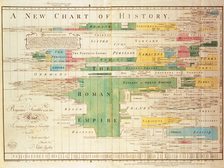Timelines can use any suitable scale representing time, suiting the subject and data. Many use a linear scale, in which a unit of distance is equal to a set amount of time. This timescale is dependent on the events in the timeline. A timeline of evolution can be over millions of years, whereas a timeline for the day of the September 11 attacks can take place over minutes, and that of an explosion over milliseconds.